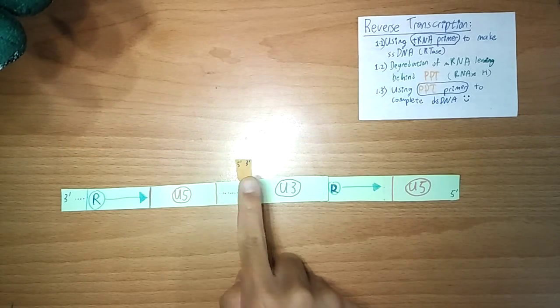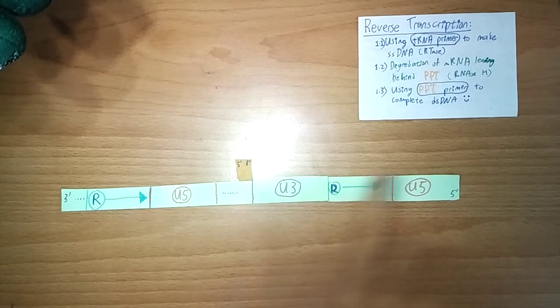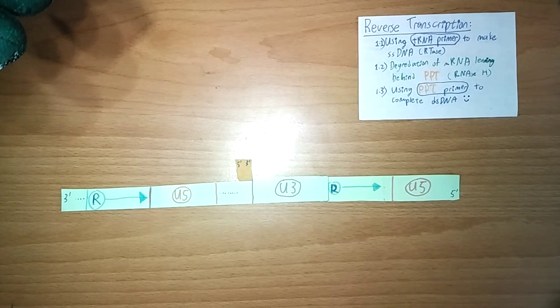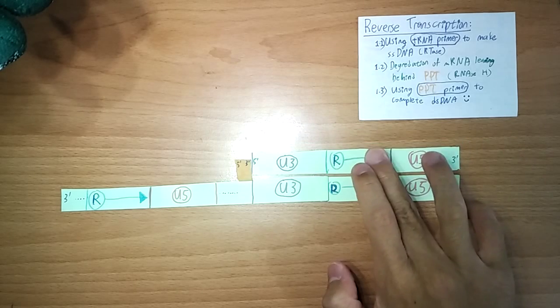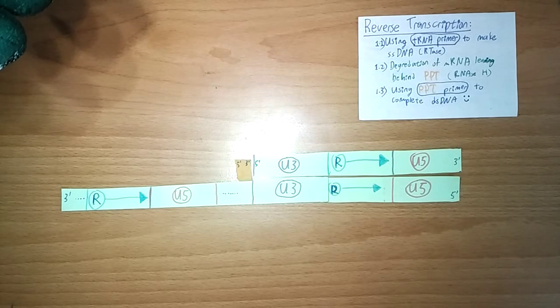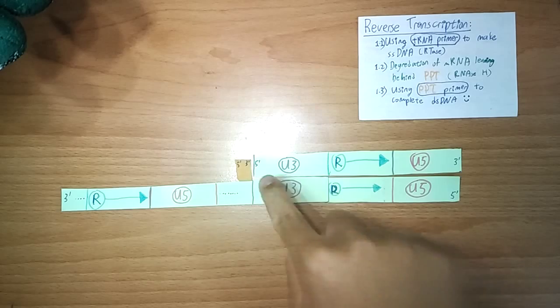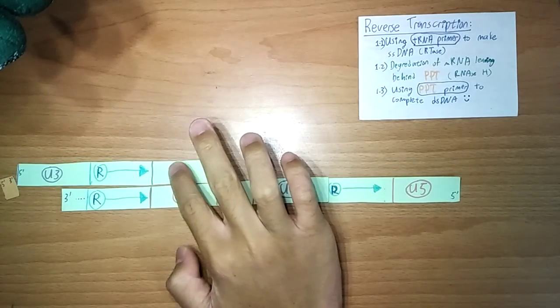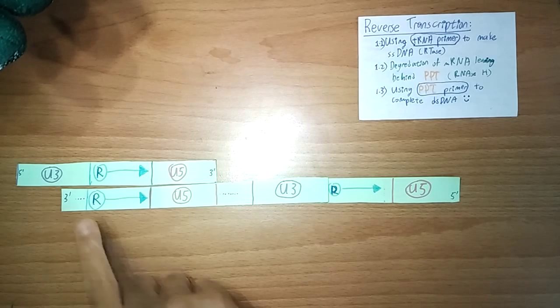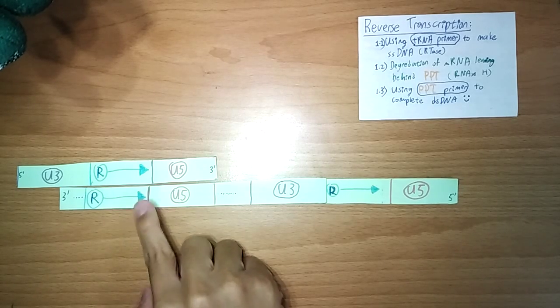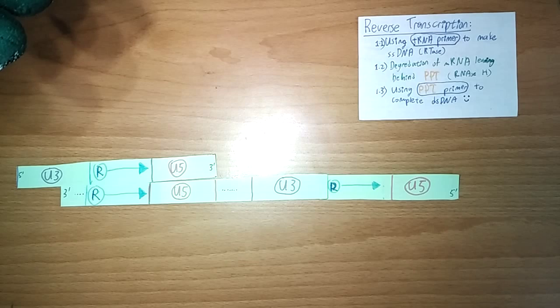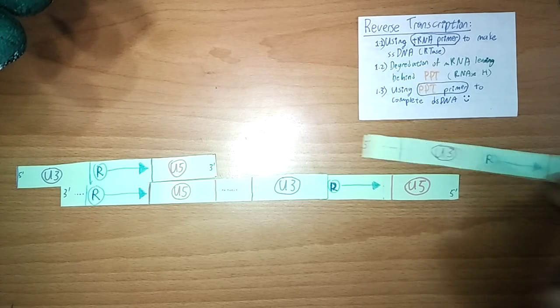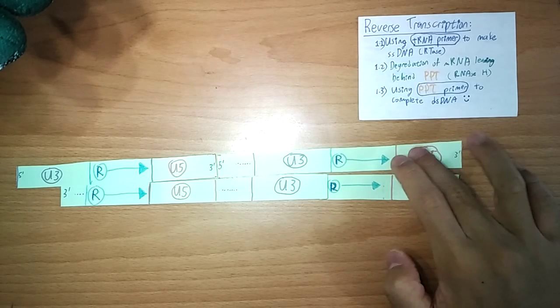Now, you have a free 3' OH end, which you can extend all the way, to make this portion. Using this 3' end, this is no longer needed. Using this 3' end, you can extend the rest of it, to make your double-stranded DNA.